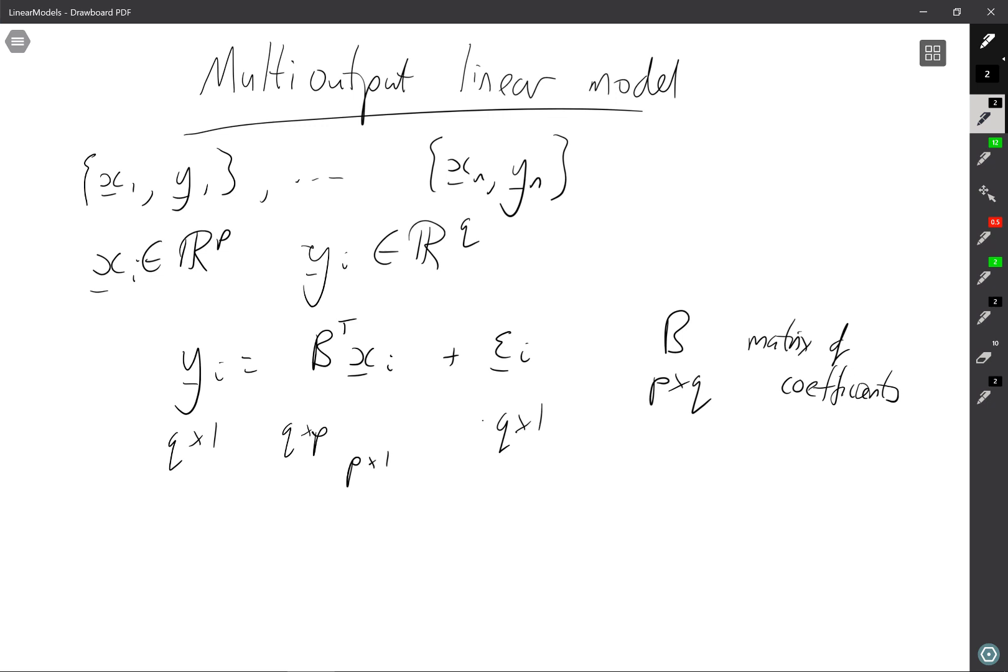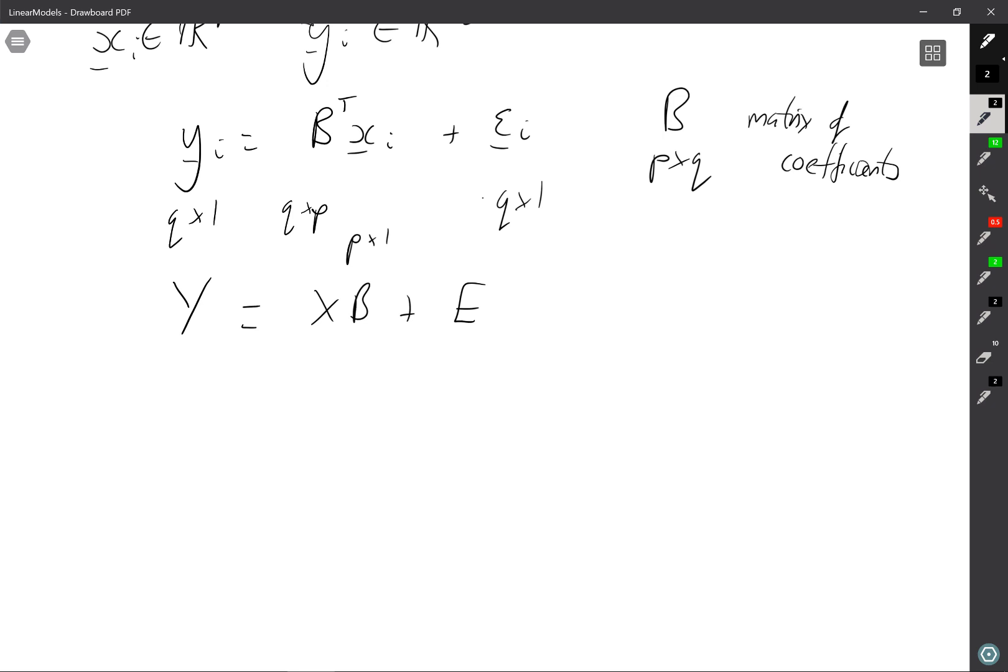Now we can write this in matrix form as Y = XB + E. Where Y now is just as the x's, we've stacked the observations as the rows. So the first row is y1 transpose, the second row is y2 transpose, last row is yn transpose. So this is X, so that's x1 transpose down to xn transpose.